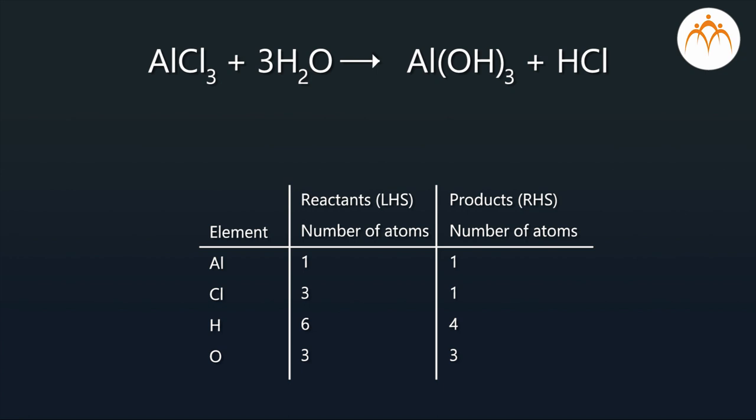Equation is still not balanced as the number of H on both sides are not equal. Initially, the number of hydrogen atoms on the reactant side is six, while on the product side it is four.